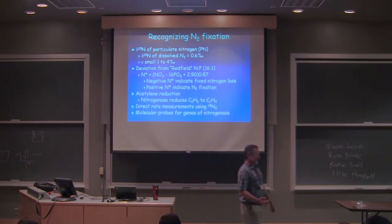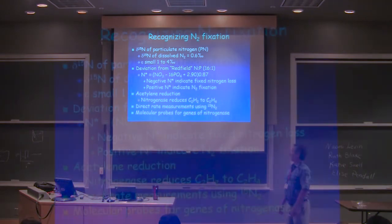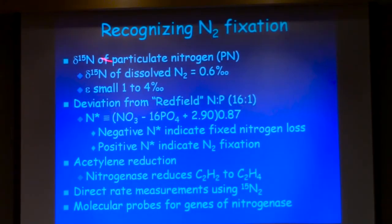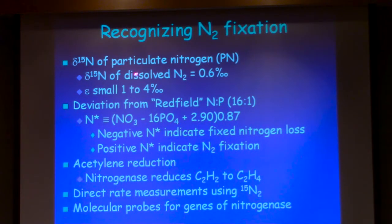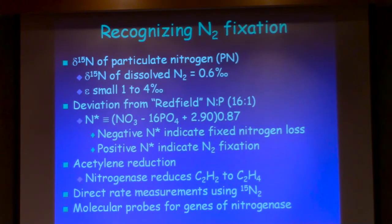We can recognize nitrogen fixation in the ocean. We can use the natural abundance delta 15N value of particulate nitrogen. The delta 15N value of dissolved N2 is around 0.6 per mil and there's a small fractionation, so typically we see low particulate nitrogen values as being indicative. But if you have nitrate in the system with a high delta 15N value, it can be difficult to recognize at times.